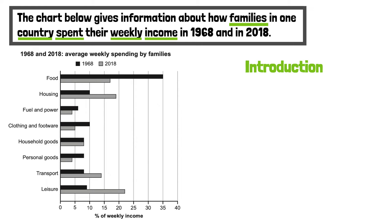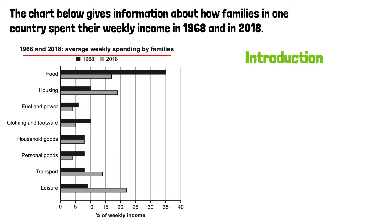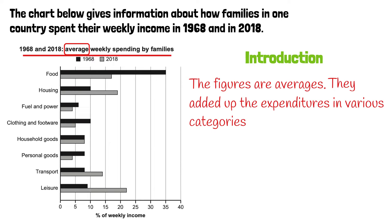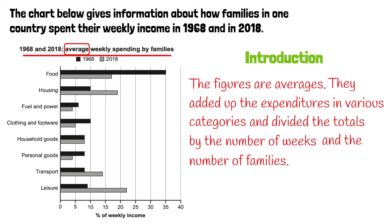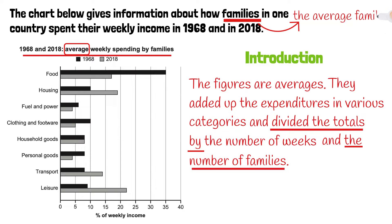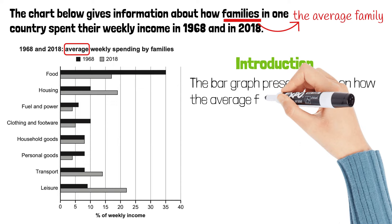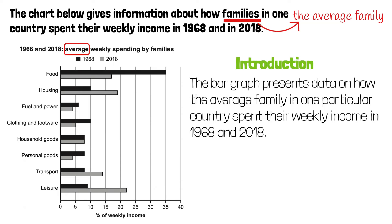Let's see if we can get some inspiration from the title. The title says average weekly spending by families. This means that the figures are averages. They added up the expenditures in various categories and divided the totals by the number of weeks and the number of families. Therefore, we can replace 'families' with 'the average family.' The bar graph presents data on how the average family in one particular country spent their weekly income in 1968 and 2018.